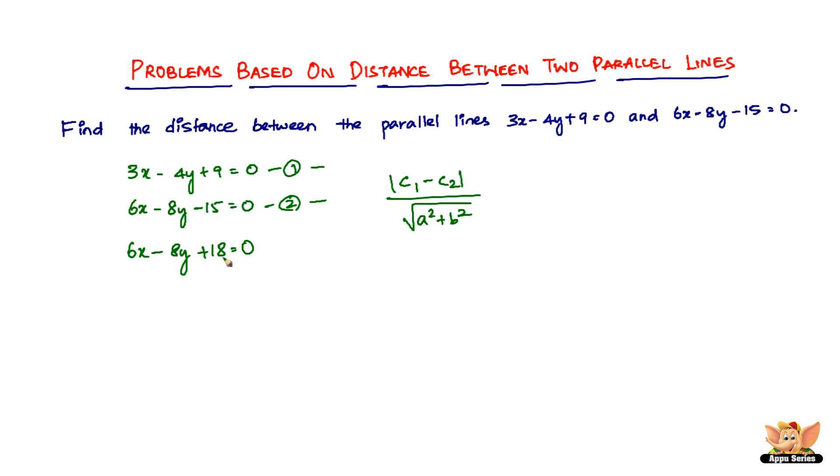In this case, c1 becomes 18 and c2 is negative 15, so we have 18 minus negative 15, which is plus 15. So mod of 18 plus 15 divided by square root of a square plus b square.